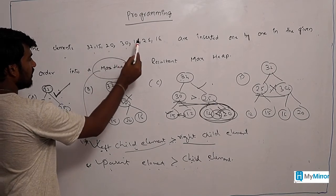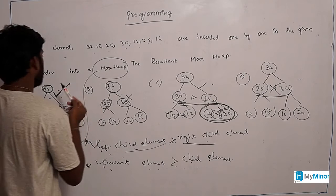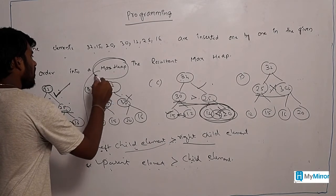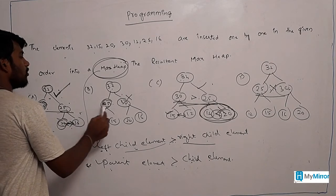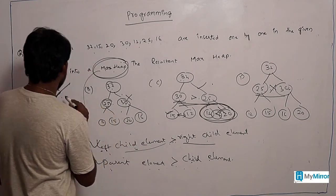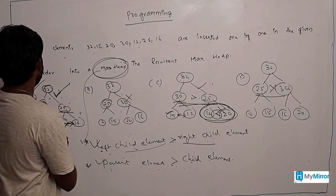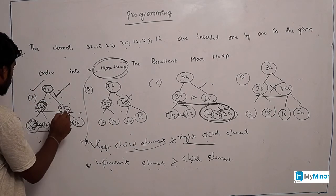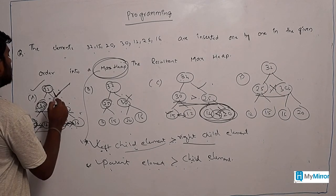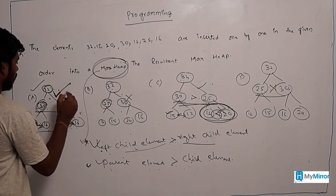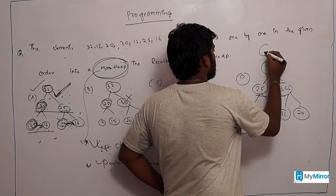So the elements 32, 15, 20, 30, 12, 25, 16 are inserted one by one in the given order into the max heap. According to our max heap conditions, the option that satisfies both conditions is A. So the obvious answer is A: 32, 30, 25, 15, 12, 20, 16. This is the max heap for the given order, and this question has been asked in GATE 2015 Computer Science IT.